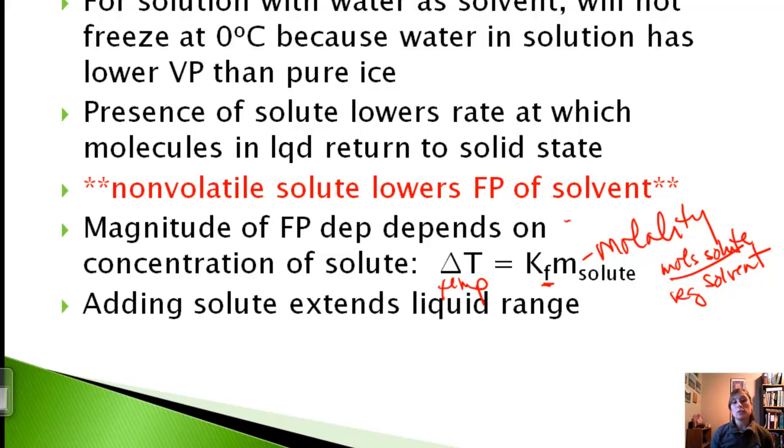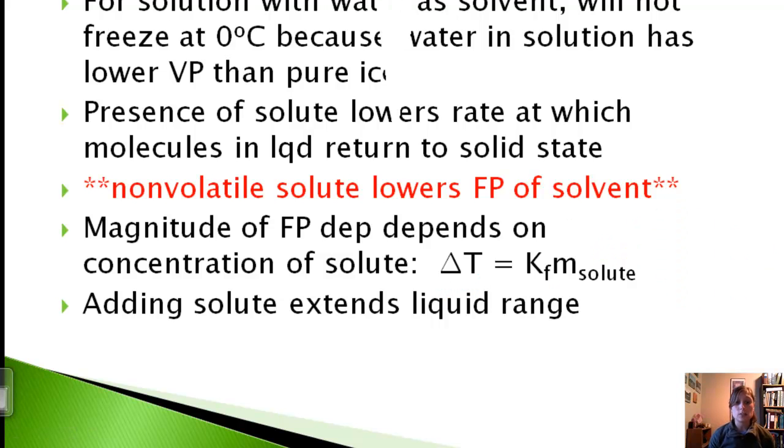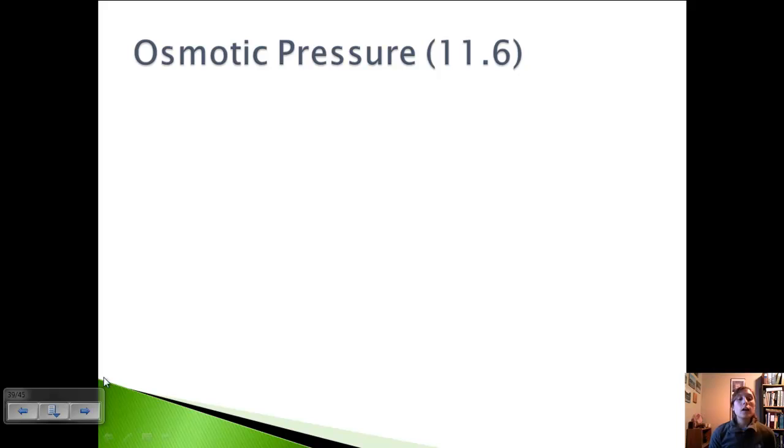Adding a solute actually extends the liquid range of the solution. Think about it: we're elevating the boiling point, so we have to heat it more to get it to go to gas, and we're lowering the freezing point, so it has to be colder to get to a solid. We're extending the time at which it's a liquid. This is helpful during periods of cold weather because we put salt on the roads to lower that freezing point. However, if it's extremely cold and everything's already below zero, it's not really going to help you out. So it has to be an ideal situation.